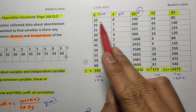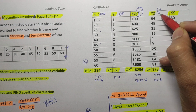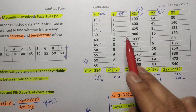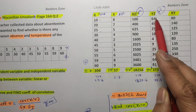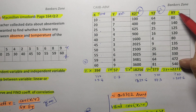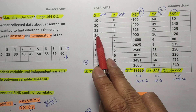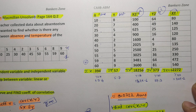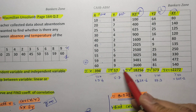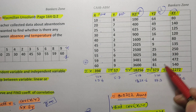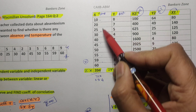Next, calculate Y² by squaring each Y value: 8² = 64, 7² = 49, 5² = 25, 9² = 81, and so on. Then calculate XY by multiplying each X and Y pair: for example, 10×8 = 80, 20×7 = 140, 25×5 = 125, and so on. After that, find the summation of each column: ΣX, ΣY, ΣX², ΣY², and ΣXY.